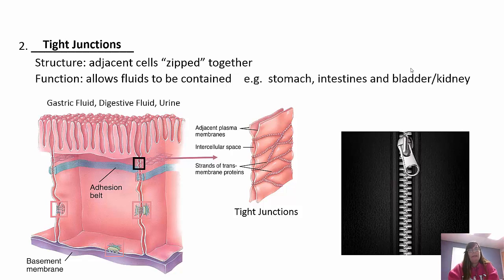Tight junctions, as the name implies, form a tight seal - adjacent cells are basically zipped together, allowing fluid to be contained within those cells. These are in areas where we don't want fluid to get out, like the stomach, intestines, bladder, and kidney. Our gastric fluid has a pH of about 2 - you don't want it leaking into other organs because it would basically dissolve them. Looking at the picture, you can see it's a tight seal with no space between the cells.